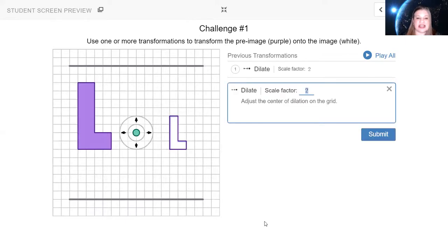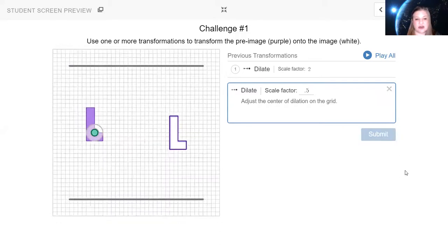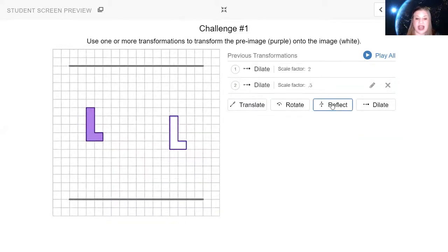Okay so using the dilate button one more time I'm going to bring it back to its original size. We did times two of a scale factor to get where it is so I'm going to do one half to undo that which is written as 0.5 or five tenths. So again I'll put my fixed point and we're going to scale it back down to its original size and look at what we can do next.